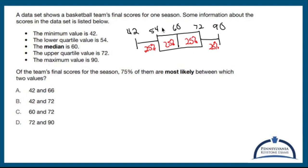Let's see what they're going to ask us. Maybe this is too much, but at least this gives us a nice little visual. Of the team's final scores for the season, 75% of them are most likely between which two values?